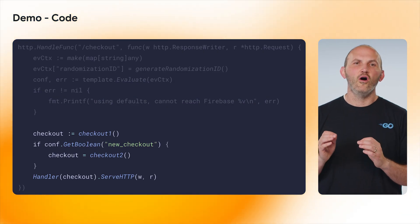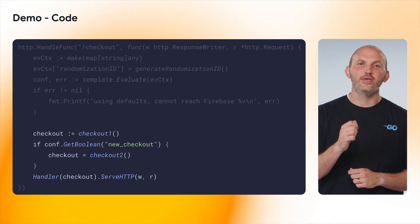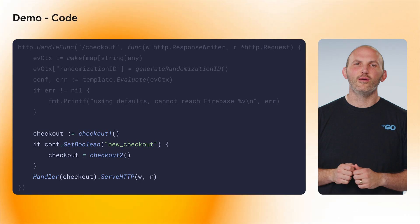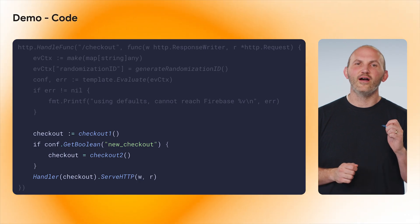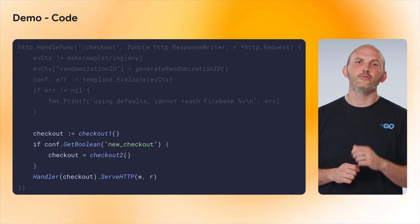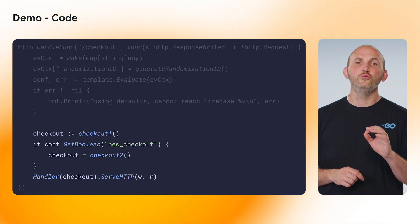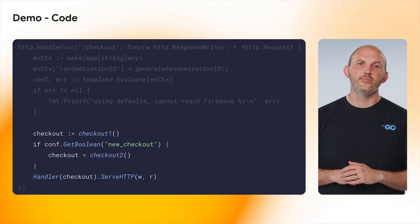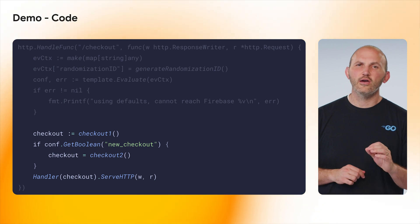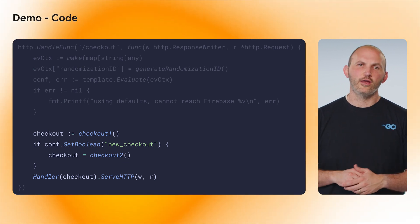Here, we can then call config.getBoolean and pass in the parameter name we defined in the Remote Config dashboard earlier — in this case, it will be New Checkout. If New Checkout is true, we serve the New Checkout experience.